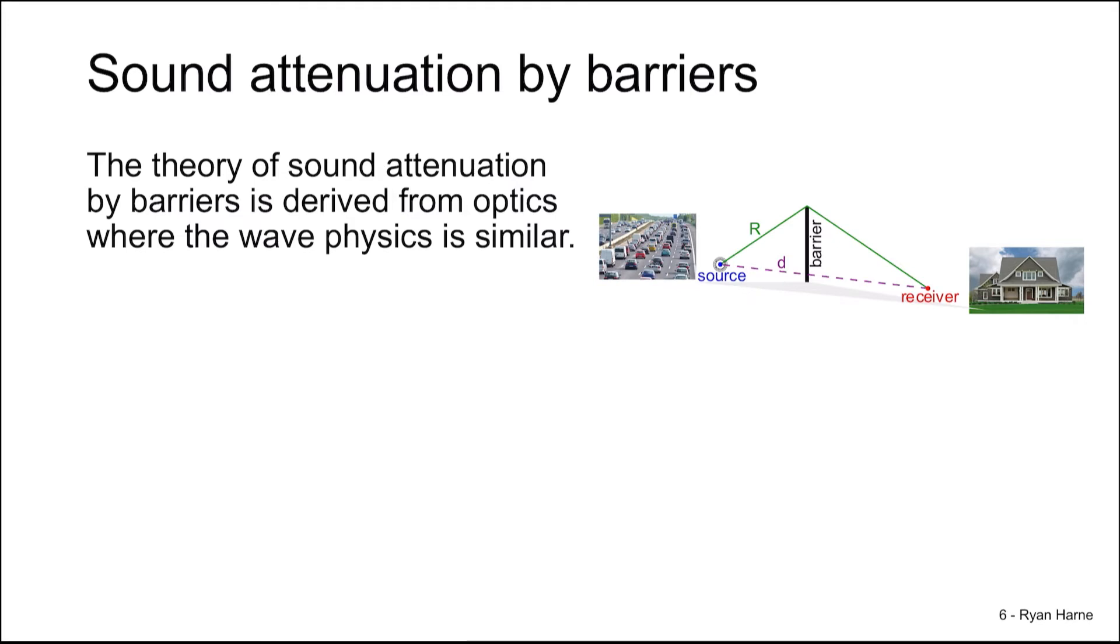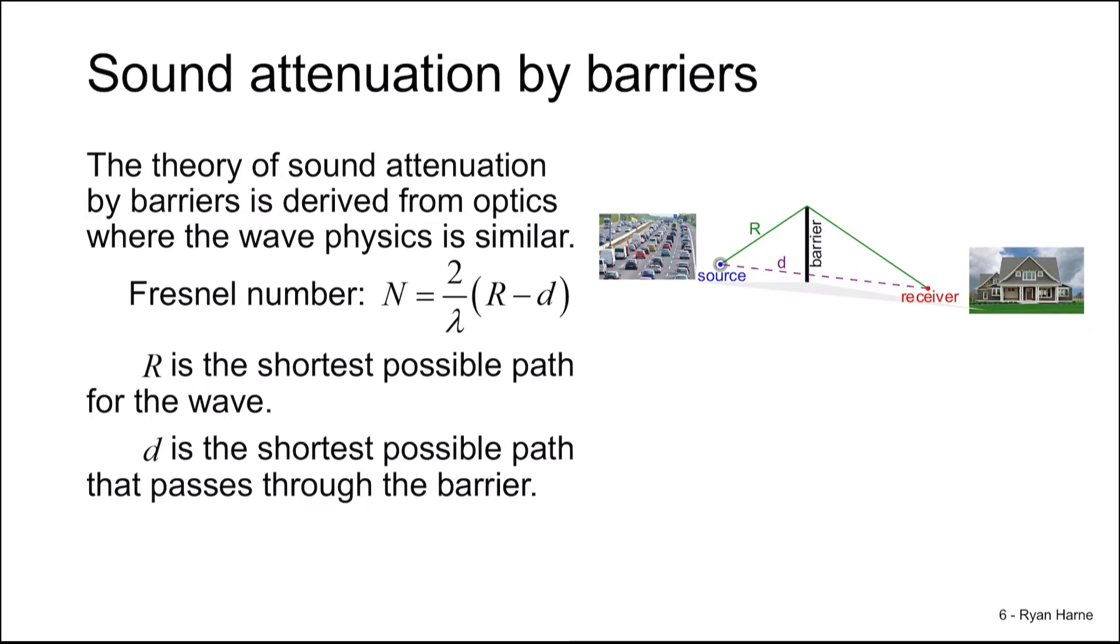The theory that we use to determine the sound attenuation by the barrier derives from the Fresnel number. It's a relationship between these distances, and specifically the difference between R and D, and the wavelength. R is the shortest possible path for the wave to propagate, whereas D is the shortest possible path that it propagates through the barrier. And it's important to understand how R and D change with respect to source and receiver location. Take this, for instance. Now the receiver is on a hill, and the shortest possible path for the wave, R is less than D. But according to this theory, there will still be attenuation.